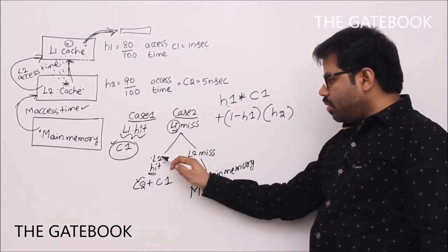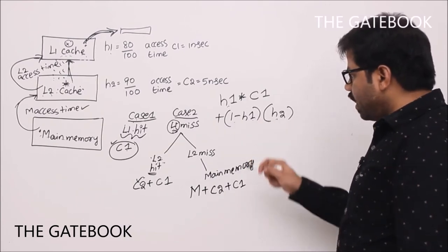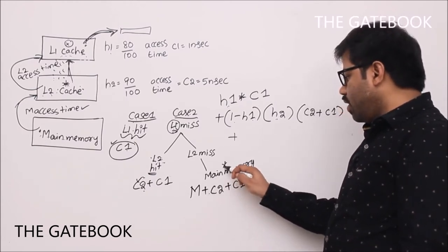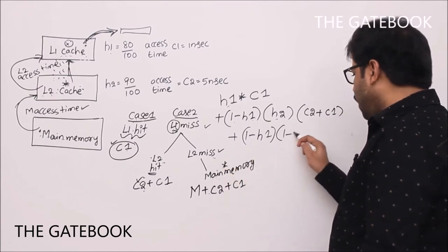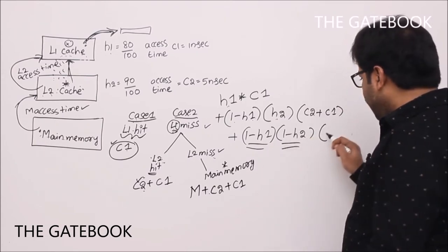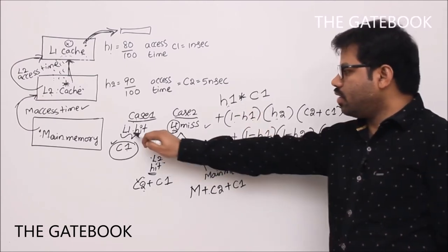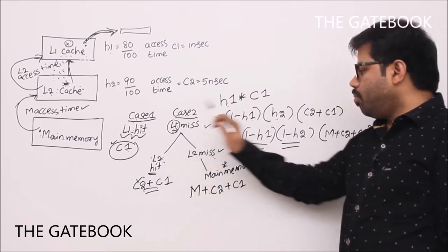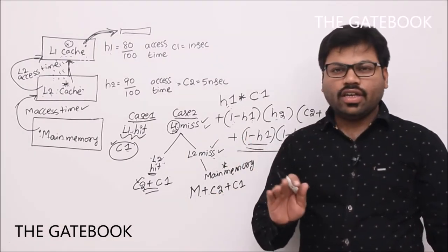So L1 misses 1 minus H1 of the time, and L2 hits H2 of those times. The probability of reaching L2 hit is (1 − H1) × H2, with cost C2 + C1. The full formula for average memory access time is: H1×C1 + (1−H1)×H2×(C2+C1) + (1−H1)×(1−H2)×(M+C2+C1).